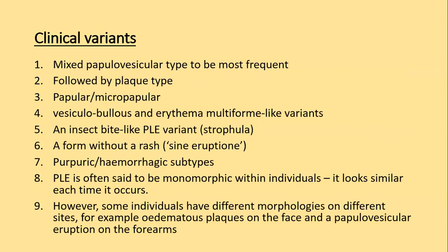There are various clinical variants of polymorphic light eruption: mixed papulovesicular type, plaque type, papular or micropapular, vesiculobullous or erythema multiforme-like, insect bite-like, rash without visible form, and purpuric or haemorrhagic subtype. PLE is said to be monomorphic within individuals — it looks similar each time it occurs. For example, in one individual PLE always manifests as papulovesicular lesions; in another, it always manifests as micropapular or papular lesions. Some individuals have different morphologies on different sites, such as oedematous plaques on the face and papulovesicular eruption on the forearm.